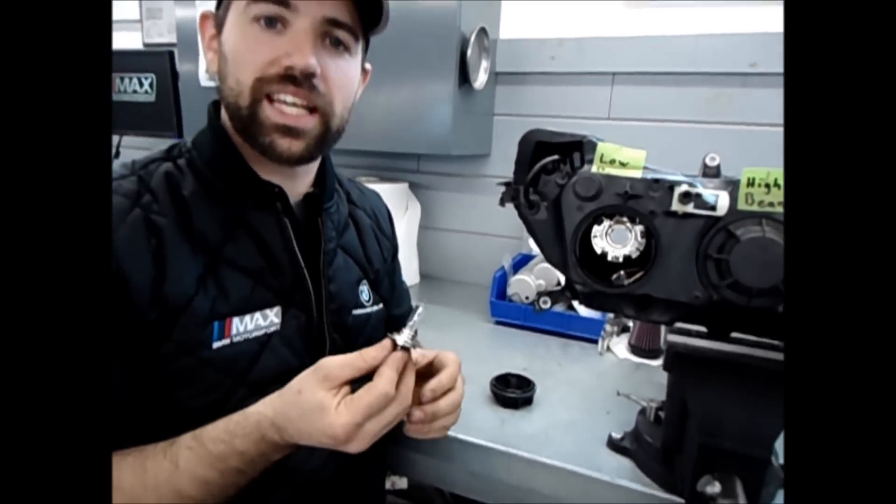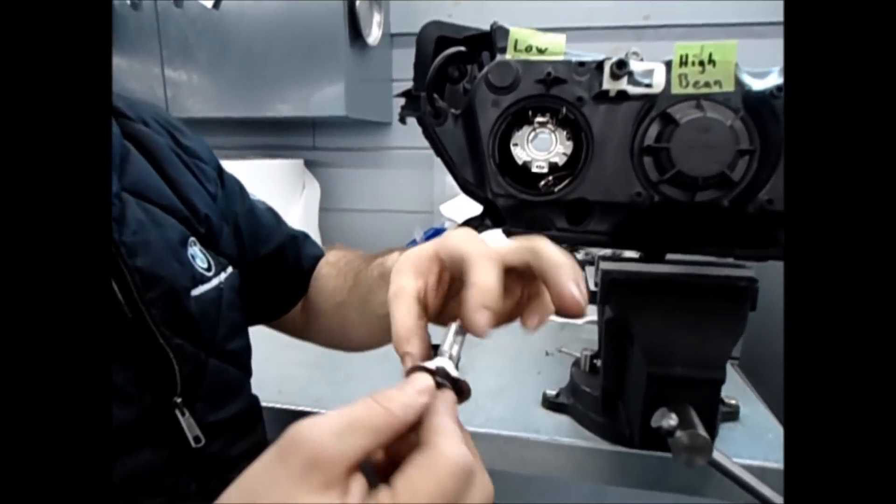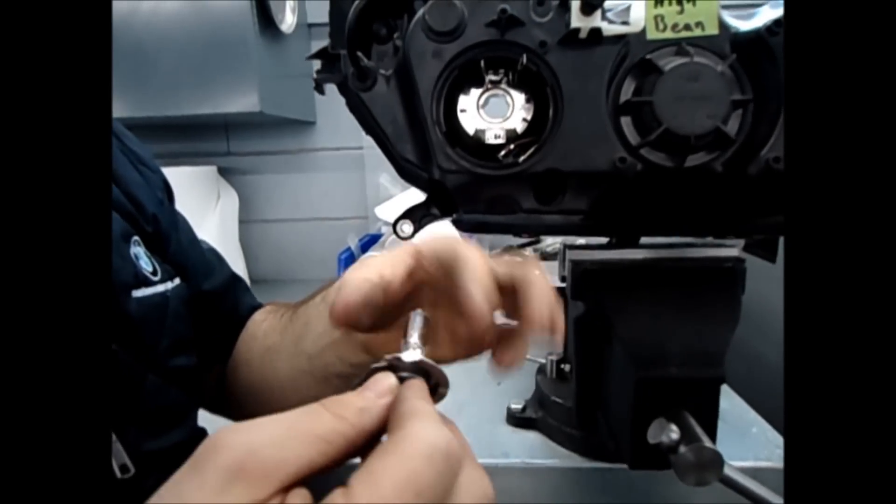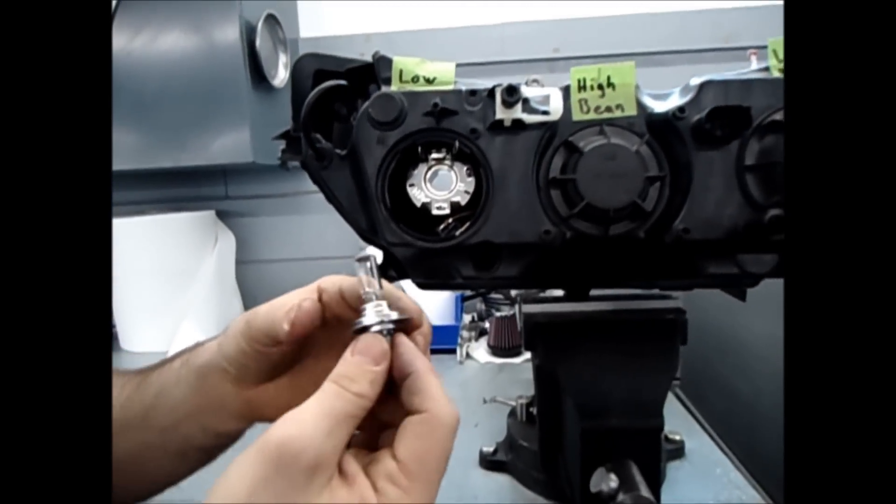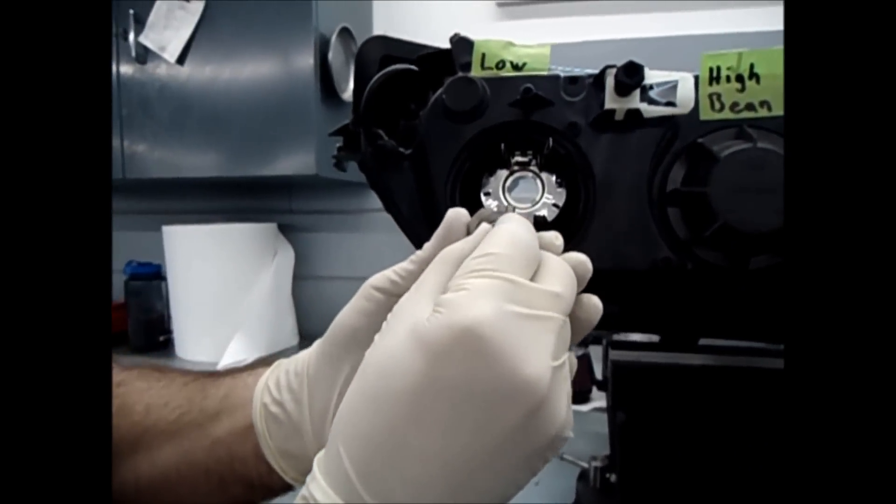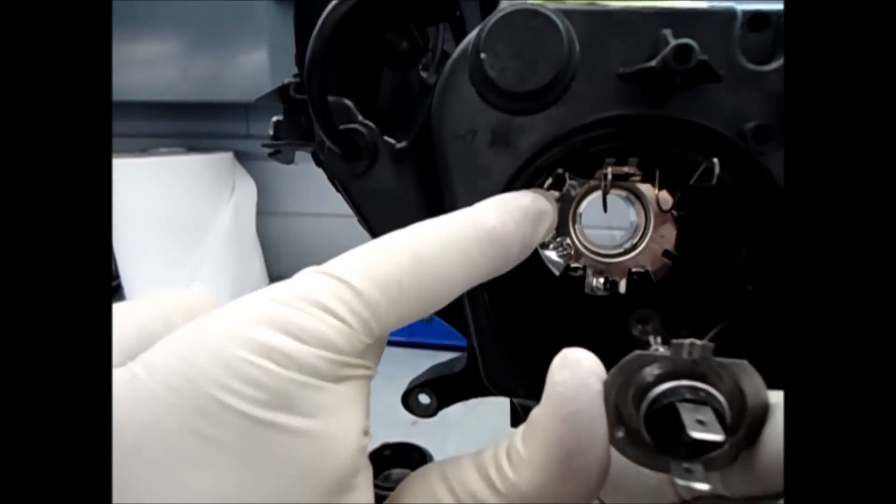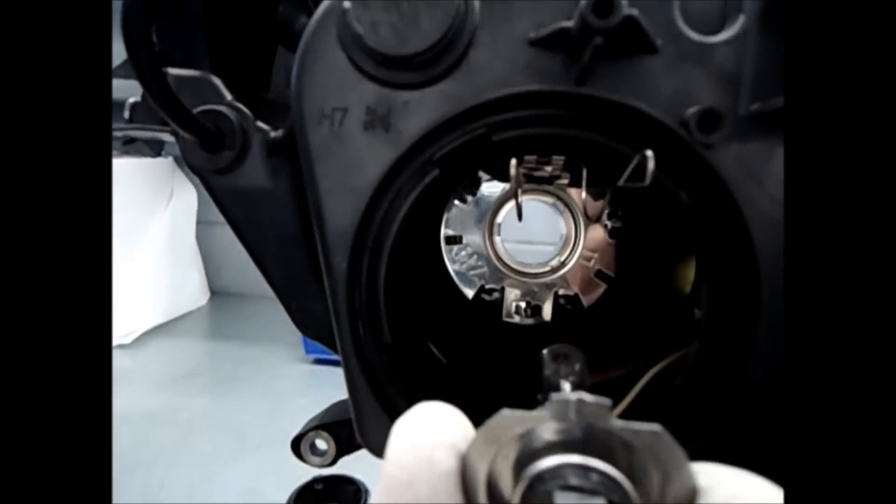For the installation of the new bulb, you want to take it out of the package and don't touch any of the actual glass part of it. If you accidentally do touch it, you can wipe it with some alcohol. When installing the bulb, make sure that the tang faces up. It has a little recess in the very top of the receptacle that it meets up with.